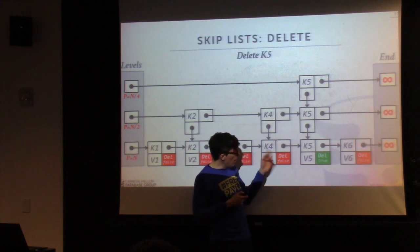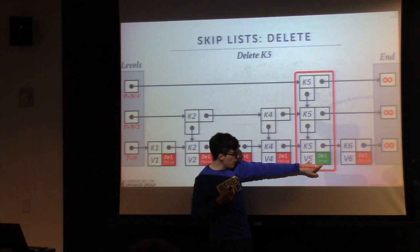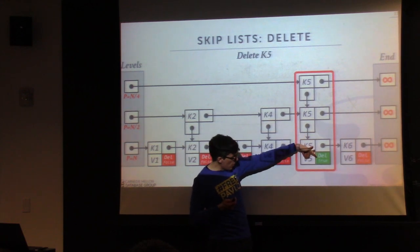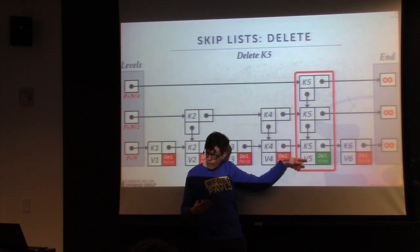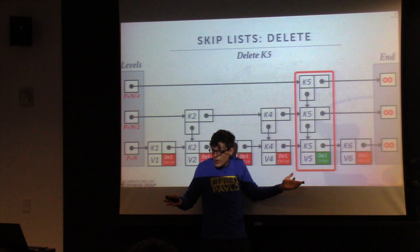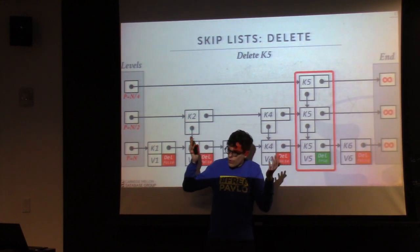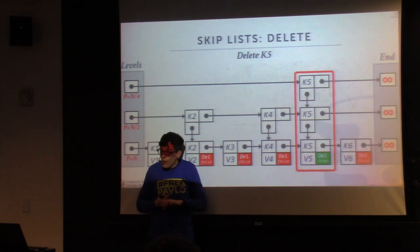In your example: two threads both get to key 5. The first thread checks whether delete is true, finds it false, prepares to read. Before it reads value 5, the other thread marks it as true. Technically it should not have been able to read that — this is the classic ABA problem. But that's okay from the index's point of view. Otherwise you'd have to lock the node when you flip this bit, making sure nobody comes along. The index doesn't care. The upper levels of the system handle phantom checking to verify whether you read what you were actually supposed to read.